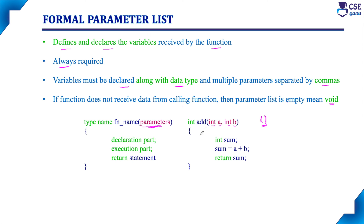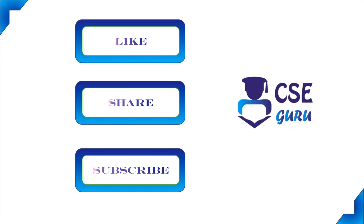In summary, function definition consists of two parts: the function header and the function body. In the function header, we have the formal parameter list. In the function body, there is the declaration part, the execution part, and the return statement. These are all the different parts in a function definition. In the next session, we will discuss function call. Thank you for watching this video.